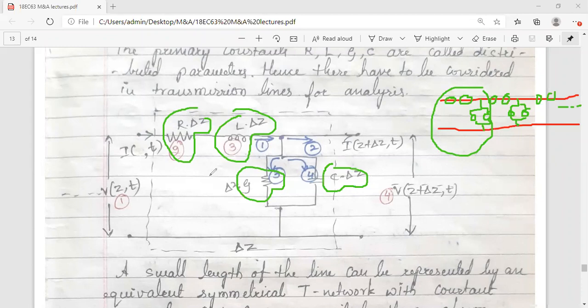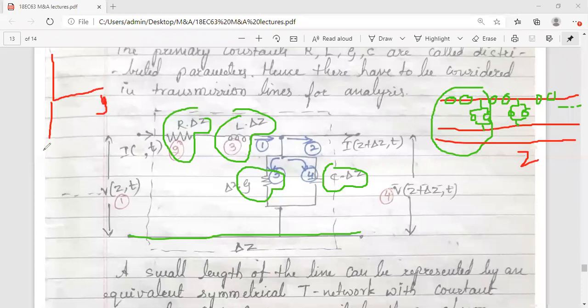So what is the length considered? This complete red line, I am considering Z in the space. You have X, Y, Z - anything you can take. I am taking Z. In some textbooks they have taken X. You can take any variable, no problem. Here it is taken as Z.